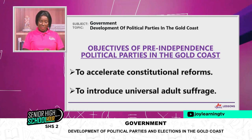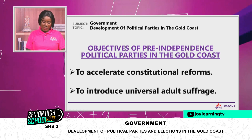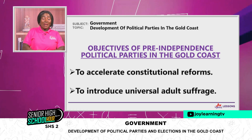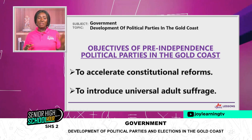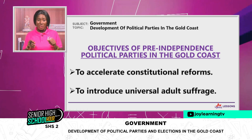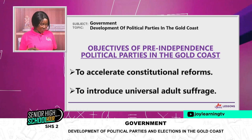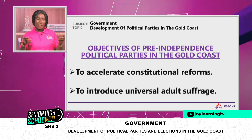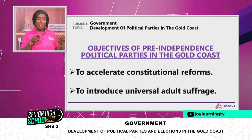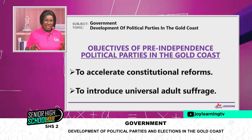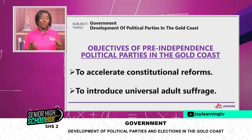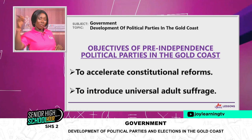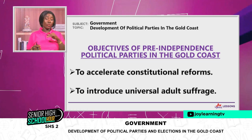One objective was to accelerate constitutional reforms. To get to the point of taking over administration, constitutional reforms had to be done. The first constitution, Clifford's constitution of 1916, did not give the African the chance to hop onto the administration. Guggisberg's constitution of 1925 looked a little better, but still didn't give the African enough advantage.